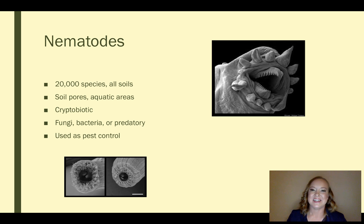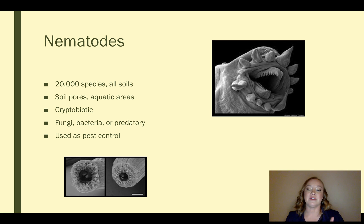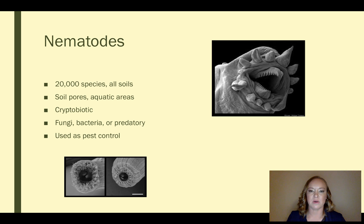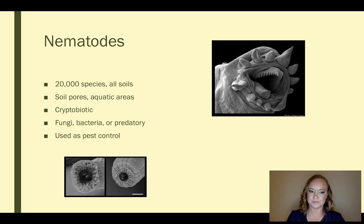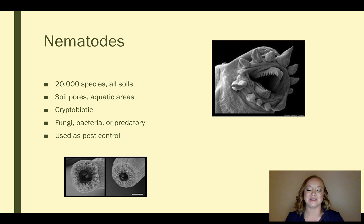Next, we have nematodes. There are about 20,000 different species of nematodes and they can live in all different soil types. They usually move through the soil pores and can also live in aquatic areas, in microscopic pockets of water. Something interesting about them is that they can go into a cryptobiotic state — kind of a resting state where they're not eating, there's not a lot of respiration going on, and they're just waiting until they feel like they want to come back. Nematodes also like to munch on fungi or bacteria, or they can even be predatory and munch on other nematodes. I've included a picture in the top right-hand corner of a nematode going after another nematode.